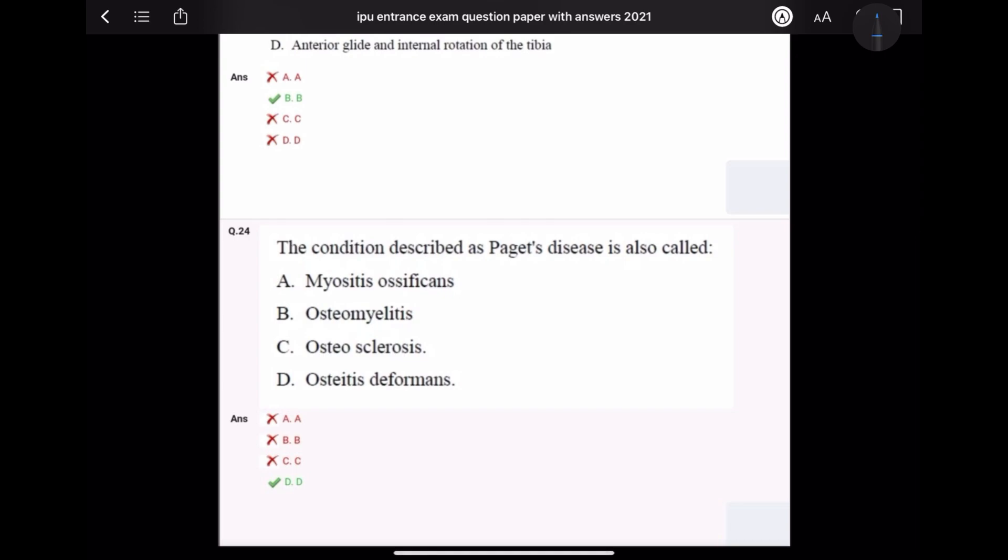Question number 24: The condition described as Paget's disease is also called? Answer is osteitis deformans. It is disruption of old bone and replacement with new bone. Paget's disease is also called osteitis deformans. Answer is D.